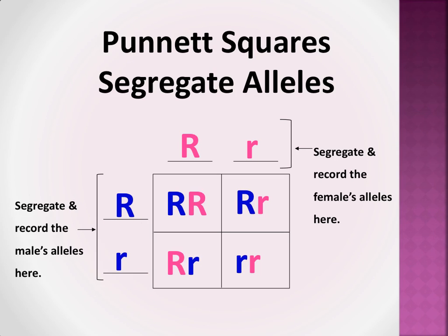Next, you put together the parent's alleles in all possible combinations. Dad's dominant allele goes over here, and mom's allele comes down to form a homozygous dominant genotype. In another example, dad's allele moves all the way over, and mom's comes down to form a heterozygous genotype. In another case, mom happens to donate the dominant allele and dad donates the recessive allele — again a heterozygous genotype. And over here, each parent donates a recessive allele, making this a homozygous recessive genotype.